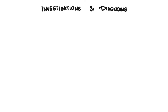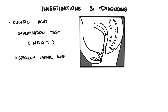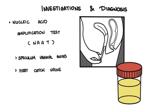Diagnosis is usually through a nucleic acid amplification test, NAAT, which is the test of choice with high sensitivity. It can be done using a vaginal swab, a first-catch urine sample, a urethral swab in men, or a conjunctival swab. Culturing of the organism is not routinely done because of its lower sensitivity and the costs involved.